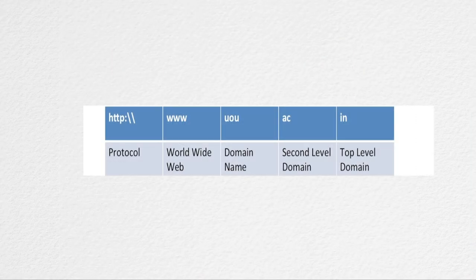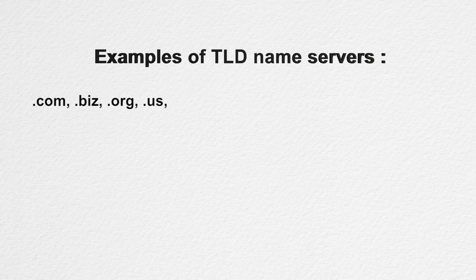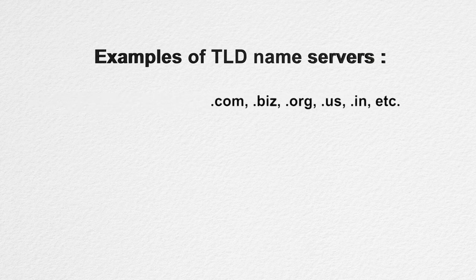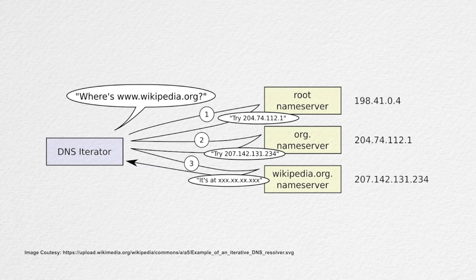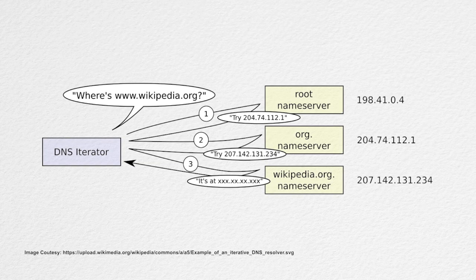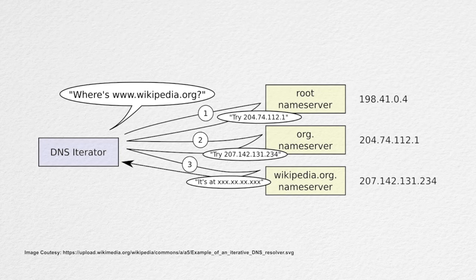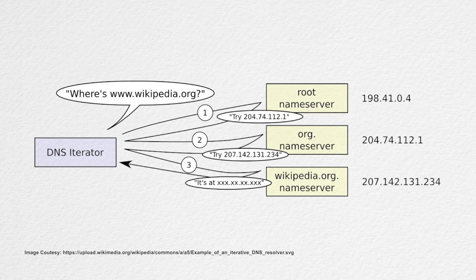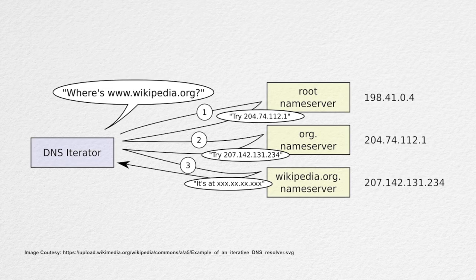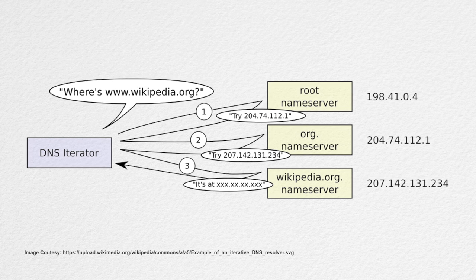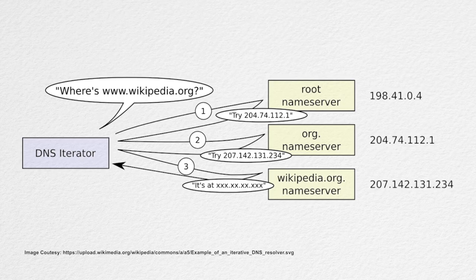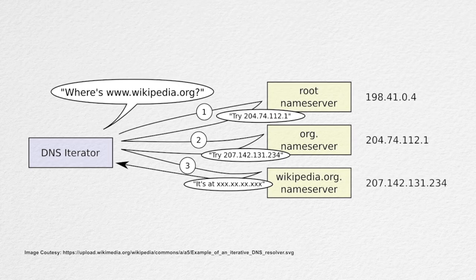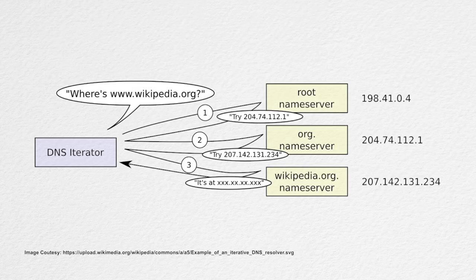In our example, the URL was www.uou.ac.in, and the last part is '.in'. Some examples of TLD name servers are .com, .biz, .org, .us, .in, etc. These TLD name servers act as a switchboard and direct the query to the appropriate authoritative name server maintained by each domain. The authoritative name server maintains DNS records along with other useful information. This address record is returned back to the requesting host computer via the name server and ISP DNS server. Intermediary servers keep a record of this IP address in their DNS cache so that if the same request is encountered again, they don't have to go through this process again. If the same URL is requested again, the DNS cache of the local host computer will return the IP address directly.